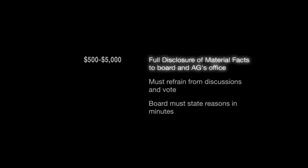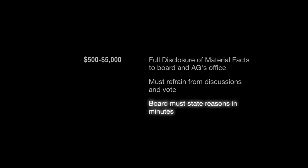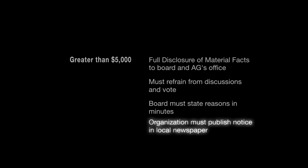What if it does go over $500? The law says that there is a conflict of interest and three things must happen. The first requirement is that there must be full disclosure of the material facts of the transaction to the Governing Board and the Attorney General. Second, the person with the conflict of interest cannot participate in the discussions and must recuse themselves from the vote. Third, the Board must record in the minutes why it chose the action it did. Recuse just means that they can't vote on that particular issue. The final requirement is that the transaction must be approved by two-thirds of the voting members.